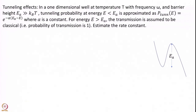The second problem is slightly harder but interesting — it shows you how to include quantum mechanical effects in transition state theory. Let us imagine I have only a one-dimensional well maintained at some temperature T. The frequency is given as omega, and the barrier height Ea is much greater than kT. We are going to include tunneling in this question.